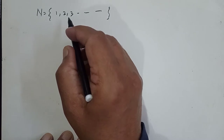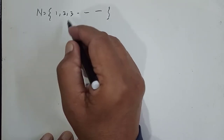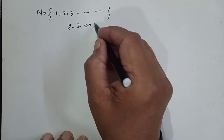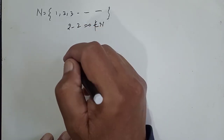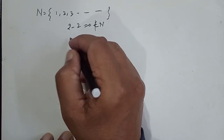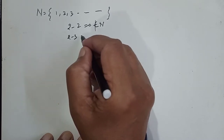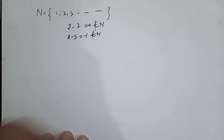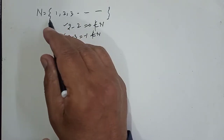These natural numbers have two deficiencies. One of them is when we subtract a number from the same number, i.e. 2 minus 2 equals 0, and 0 does not belong to N. So 0 is not a natural number. Secondly, when we subtract a larger number from a smaller number, for example 2 minus 3 equals minus 1, which again is not a natural number. Therefore, these are the two deficiencies in the natural number system.